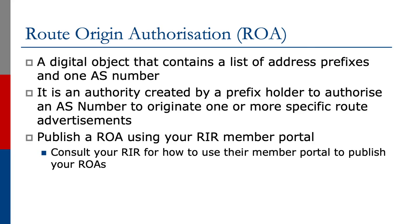Route Origin Authorization, or ROA, is a digital object that contains a list of address prefixes and one AS number. It is an authority created by a prefix holder to authorize an AS number to originate one or more specific route advertisements.